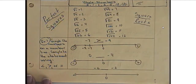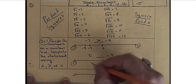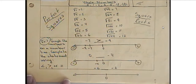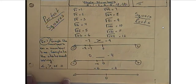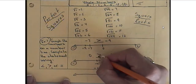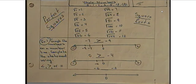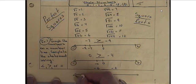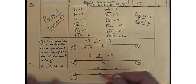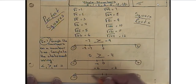Second number line: we have negatives, positives, and 0 in the middle. We have to compare 0 and negative 4. Negative 4 will be somewhere on the left side — so 0 is greater than negative 4.